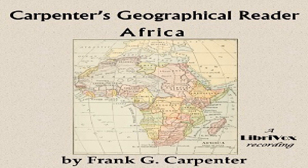Preface of Carpenter's Geographical Reader: Africa. The purpose of this book is to give a simple knowledge of the peoples and countries of Africa as they are today. It is not intended as a geography but merely to supplement and enliven the study of the geography textbook by being read in connection with it. The author takes the children on a personally conducted tour around and through the great African continent, the journey being one of exploration and study as well as sightseeing. The travelers cross the Atlantic Ocean from New York to the Strait of Gibraltar.